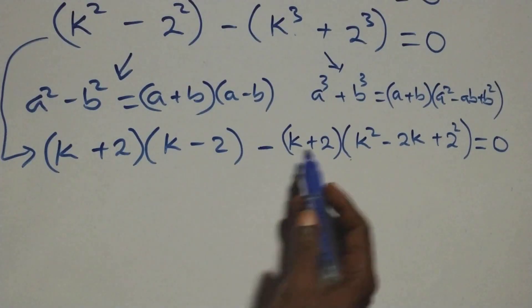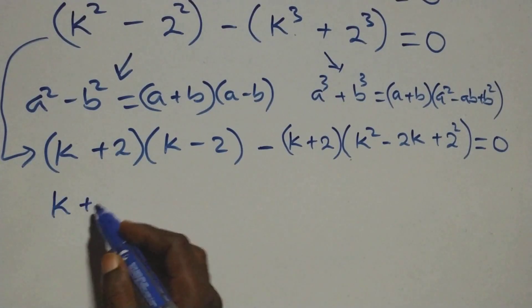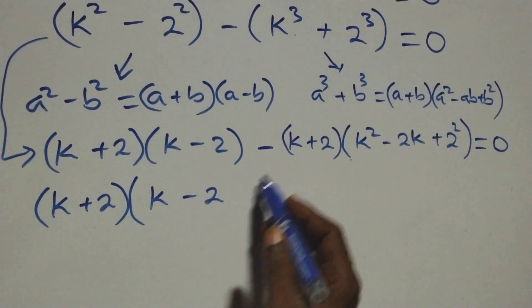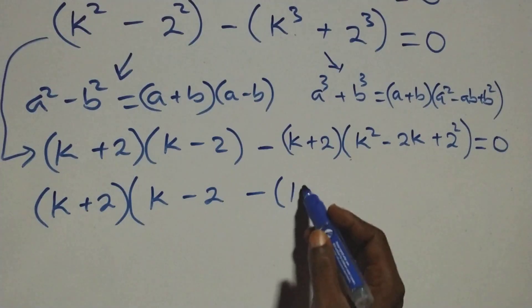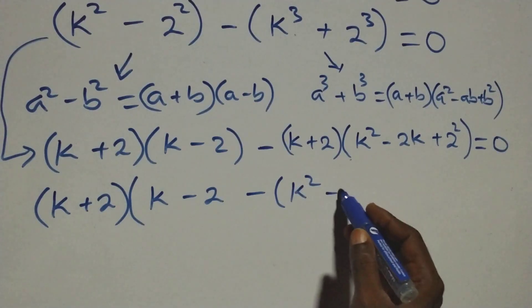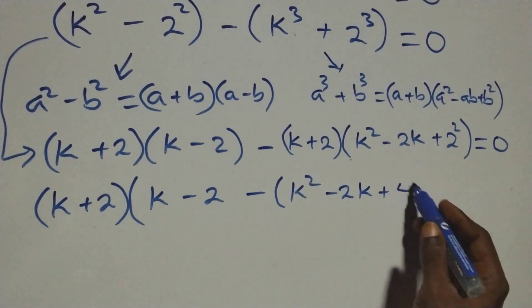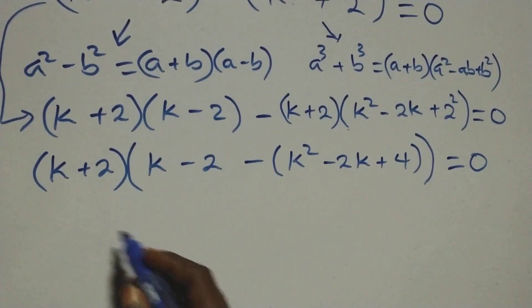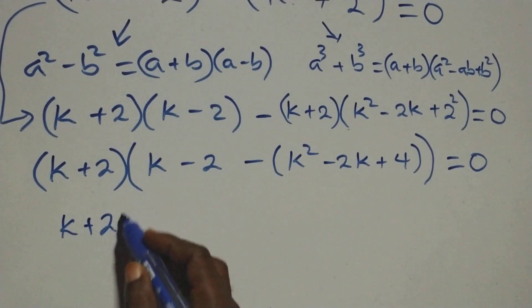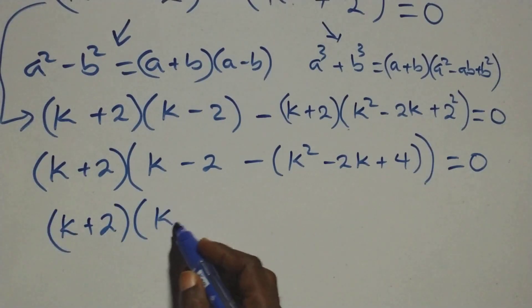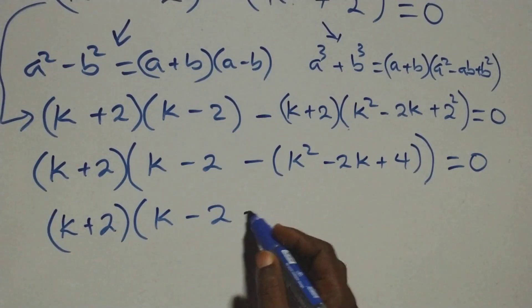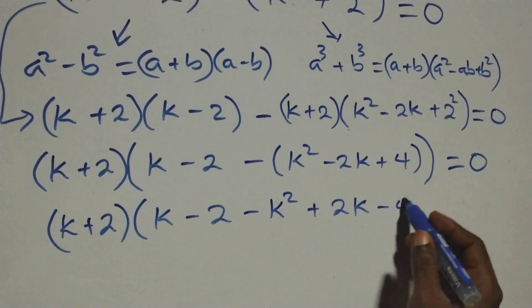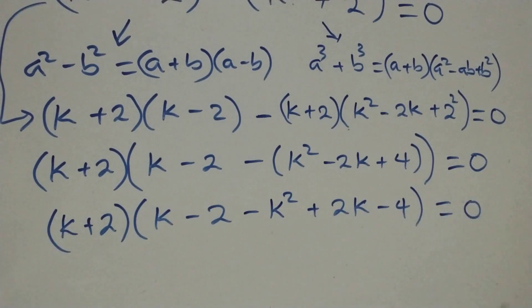Here we have (k + 2) as a common factor. Factor it out: (k + 2) into open bracket, we are left with k minus 2, minus open bracket k squared minus 2k plus 4, close bracket, then close this bracket, equals zero. Expanding: (k + 2) into open bracket, k minus 2, and minus open bracket, so we have minus k squared plus 2k minus 4, close bracket, equals zero.